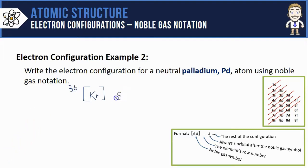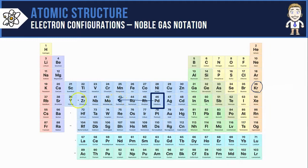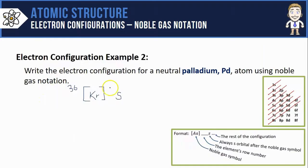Following krypton's symbol will be an s orbital, and since palladium is in row 1, 2, 3, 4, 5, it's going to be a 5s. I'll put two electrons in the 5s orbital, filling it up.